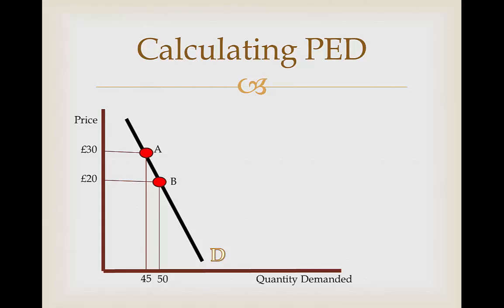Here we have a graph that's showing us the price and the quantity demanded of a certain product. We can tell that the graph has a relatively inelastic curve. So now we have to work out the PED. First we're going to have to work out the percentage change in quantity demanded.